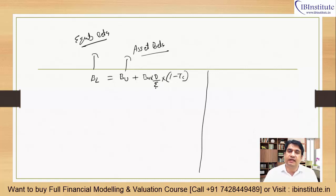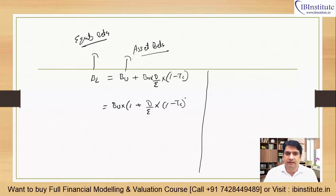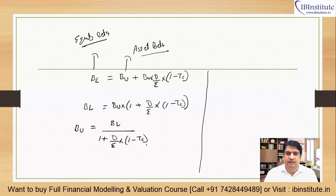So we include the tax portion. Beta unlevered equals beta levered divided by the quantity 1 plus debt-to-equity into (1 minus tax rate). Conversely, beta levered equals beta unlevered into 1 plus debt-to-equity into (1 minus tax rate). We will use this formula for both private companies and listed companies.